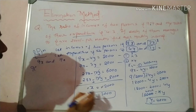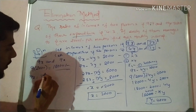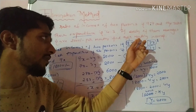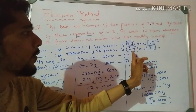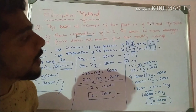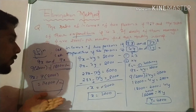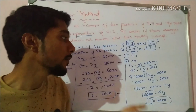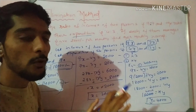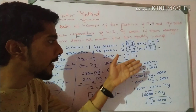Now put this value in equation one to find y. Equation one is 9x minus 4y equals 2,000. Substituting x equals 2,000: 9 into 2,000 is 18,000, so 18,000 minus 4y equals 2,000. Rearranging: 4y equals 18,000 minus 2,000 equals 16,000. Dividing by 4, y equals 4,000 rupees.